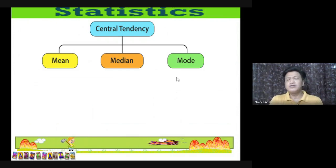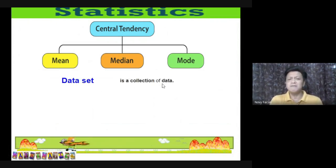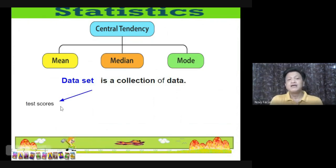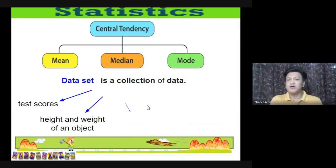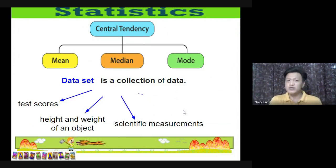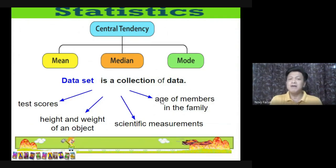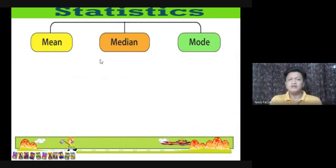But before that, where is central tendency used? When we have a data set — a group or collection of data — examples include test scores, height and weight of an object, scientific measurements in an investigation, or the ages of members in a family. These are just some examples of a data set.